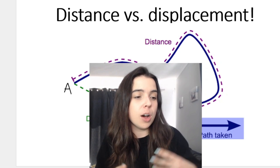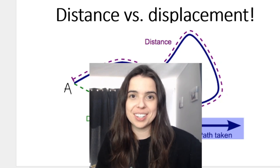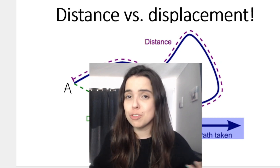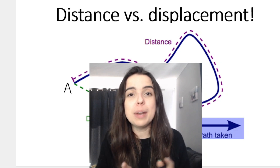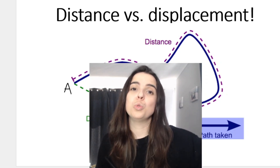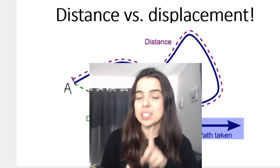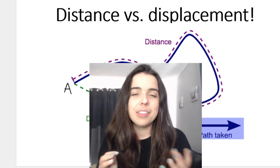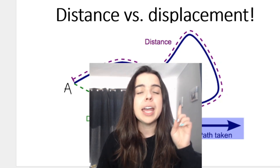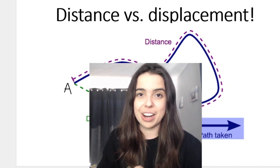For example, every morning from my house to school, I walk 20 kilometers. 20 kilometers represents distance. Displacement, however, would be that from my home to school is 20 kilometers east. Notice how with displacement I'm including a direction — that's because displacement is a vector, and vectors don't only need a magnitude, which is the size or the amount, but they also need a direction.